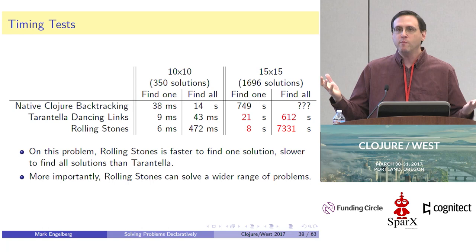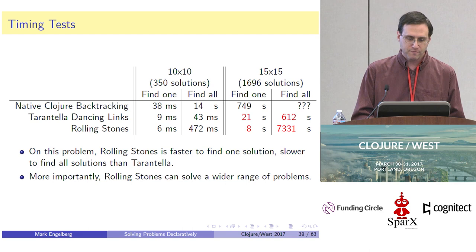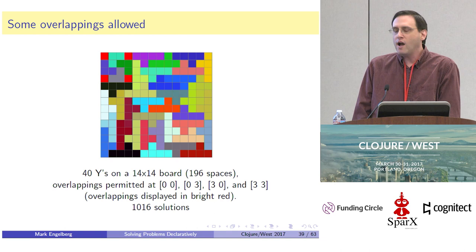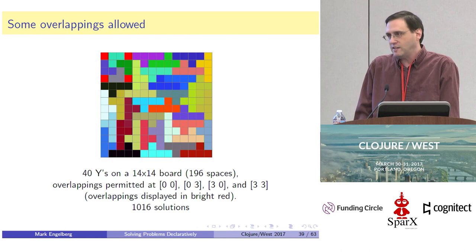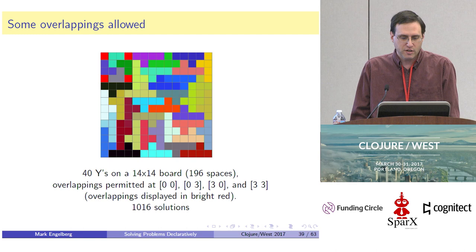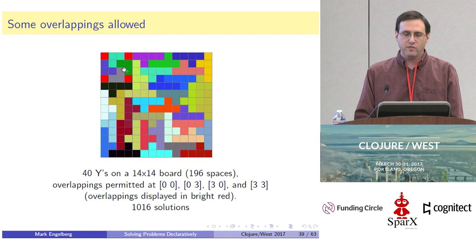But most importantly, why would we bother with Rolling Stones? The reason is that it allows us to solve a wider range of problems. For this problem, I wanted to put Ys on a 14 by 14 board — but a 14 by 14 board has 196 spaces, which is not a multiple of five. So I relaxed the problem description and allowed four overlappings at positions 0,0; 0,3; 3,0; and 3,3 — the spaces marked in red. I was able to compute how many solutions there are that satisfy this. With Rolling Stones, all I had to do was change those specific cells to exactly-two constraints instead of exactly-one constraints.